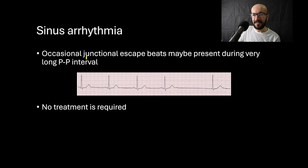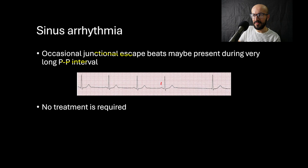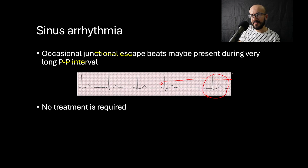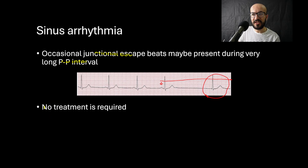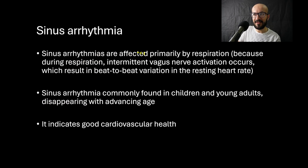In sinus arrhythmia, there are occasionally junctional escape beats that may be present during the long P-to-P interval. If the P-to-P interval is too long, we may see a junctional escape beat — a beat that has no P wave, or sometimes an inverted P wave, indicating it is junctional in origin. No treatment is required in sinus arrhythmia.